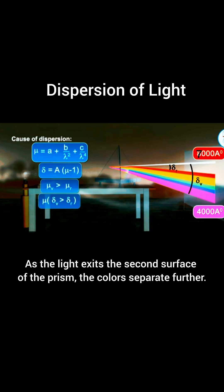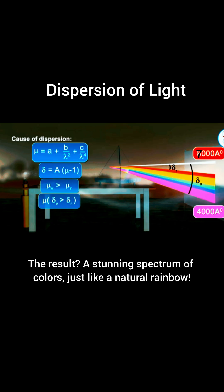As the light exits the second surface of the prism, the colors separate further. The result, a stunning spectrum of colors, just like a natural rainbow.